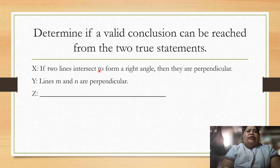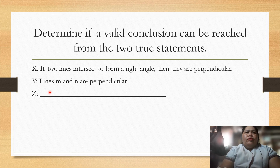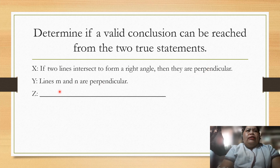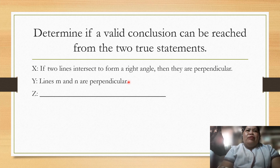Next: if two lines intersect to form a common right angle, then they are perpendicular. Y — Lines M and N are perpendicular. The conclusion: therefore line M and line N intersect to form a right angle, because they are perpendicular.